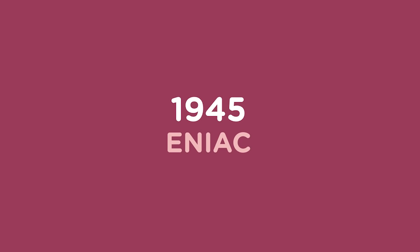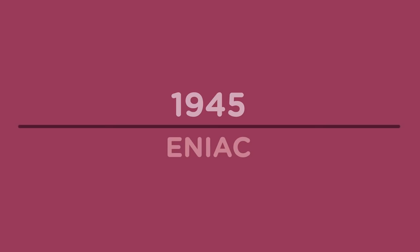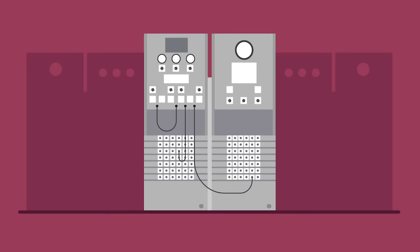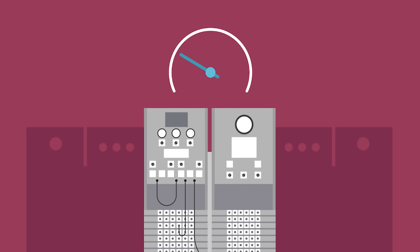Built in 1945, the ENIAC was commissioned at the University of Pennsylvania in Philadelphia. The ENIAC was nine feet tall, covered 1,800 square feet, weighed nearly 30 tons, and cost $500,000. Adjusted for inflation, that's over $7 million in 2021. It sported an impressive clock speed of 100,000 cycles per second — in other words, it could add two large numbers together 5,000 times in one second.